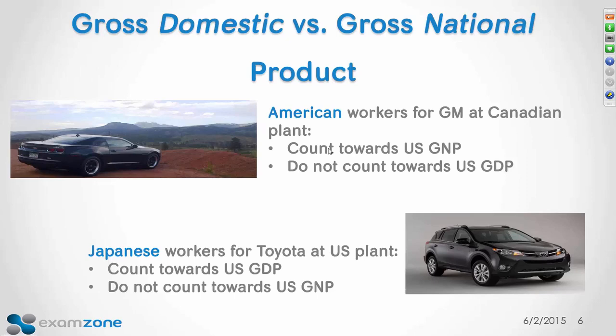The Toyota RAV4 could have been produced in a plant in the United States — say Arkansas or Kentucky. When a Japanese national at the Toyota plant produces that RAV4, it counts towards our gross domestic product since it happened here domestically, but they're not Americans. So Japanese workers at the Kentucky plant don't count towards our gross national product.